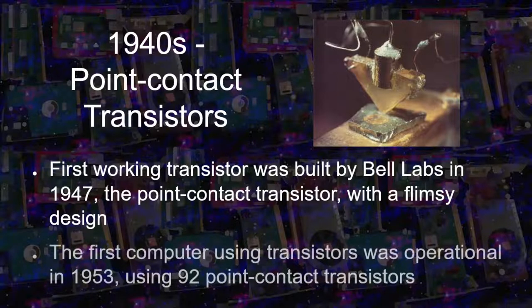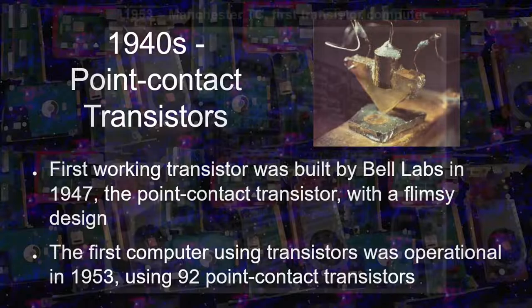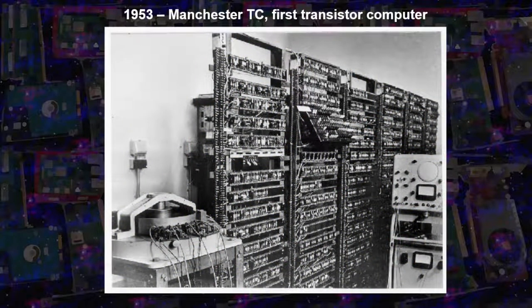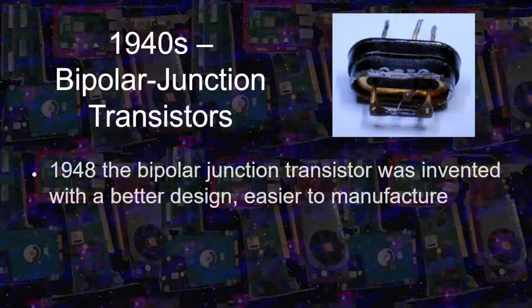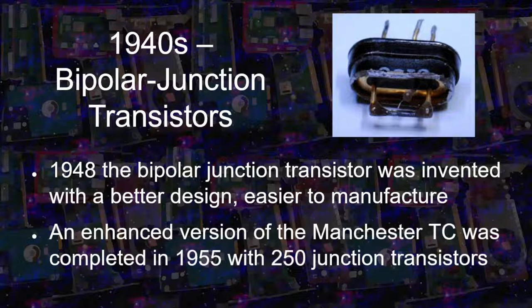Soon, the first computers using transistors started being built, making them more compact and using much less power. The Manchester TC transistor computer was one of the first computers using transistors, with 92 point contact transistors. A few years later, bipolar junction transistors appeared, which had a slightly more robust design and are still relevant for many applications. An improved version of the Manchester DC was built with 250 junction transistors, probably bipolar.